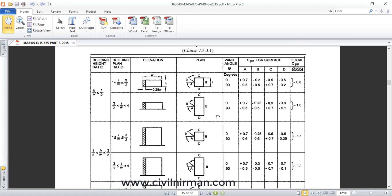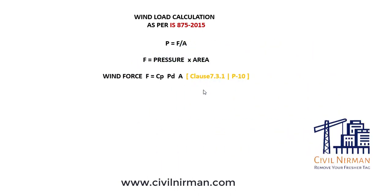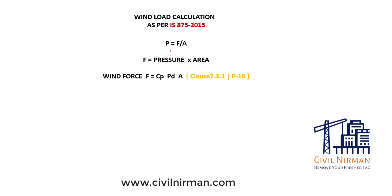The basic logic behind wind calculation is based on the definition of pressure: pressure equals force divided by unit area. So force equals pressure multiplied by area. Depending on structural conditions, wind acting on a building or object can cause either suction or pressure based on the wind intensity.